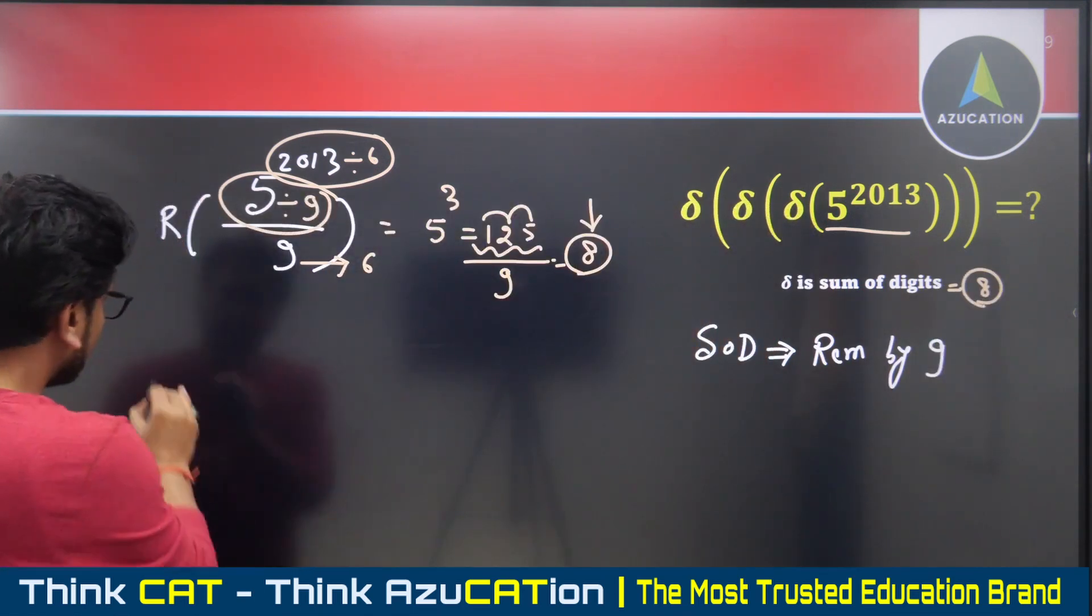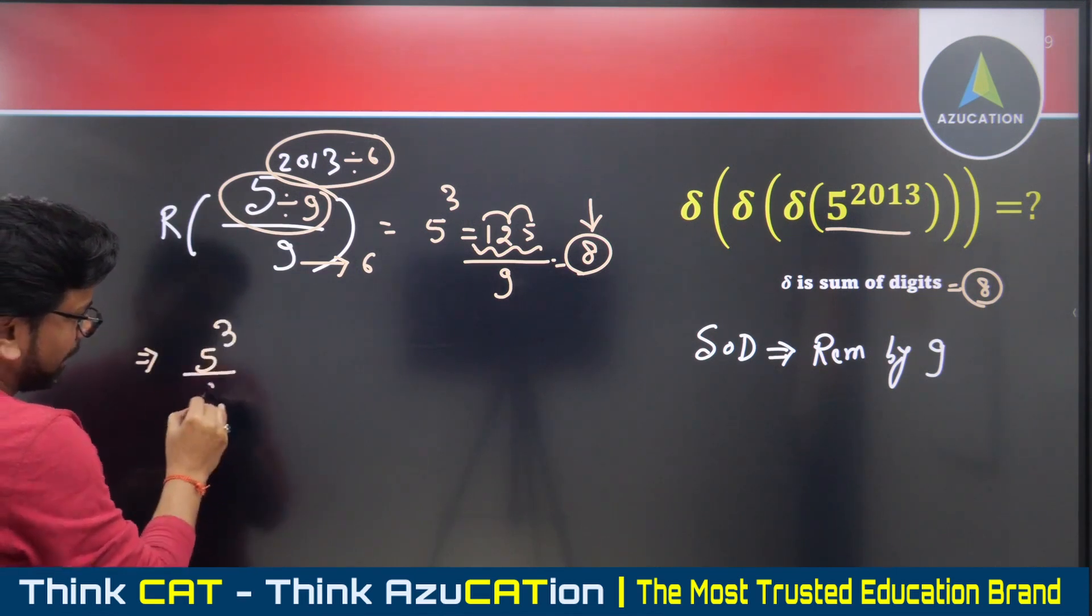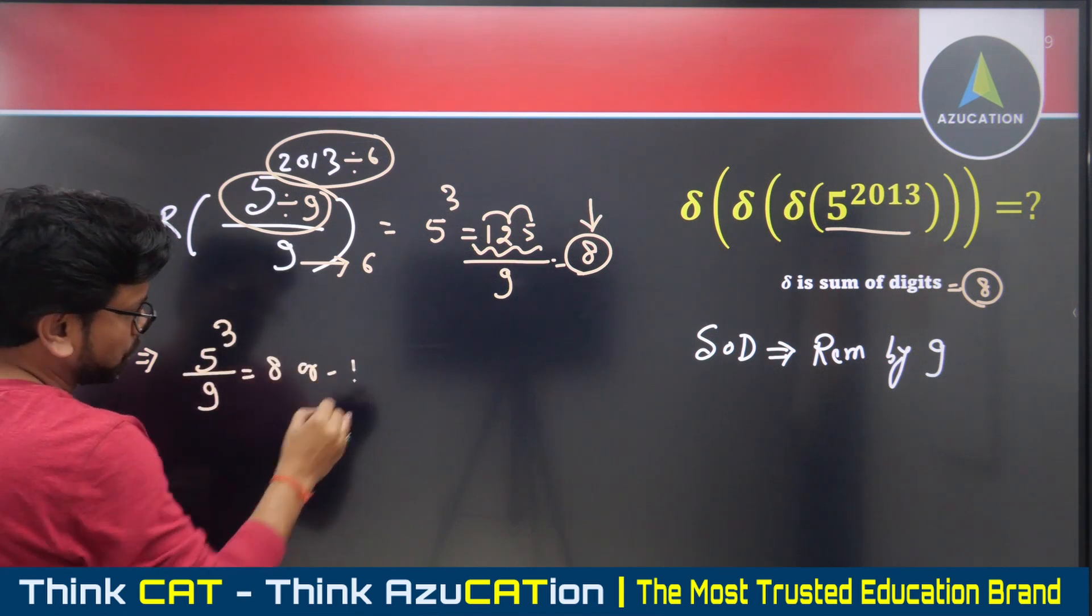This is the first method. You can calculate remainders using a second method too. I know that 5 cube divided by nine gives remainder eight, or minus one.